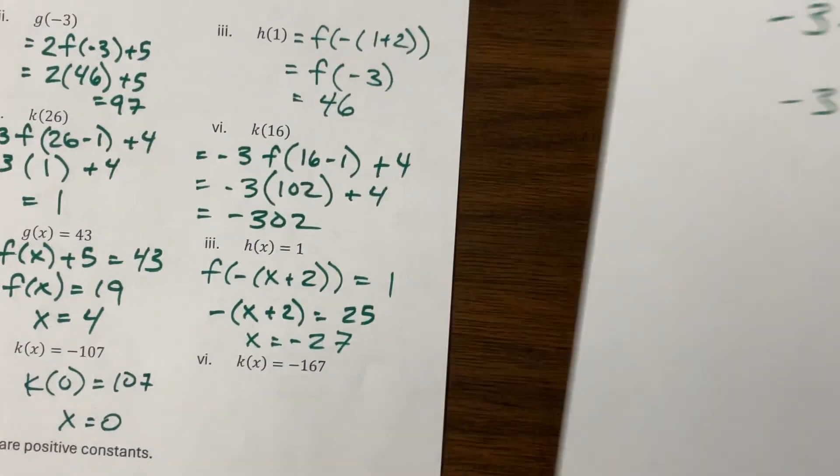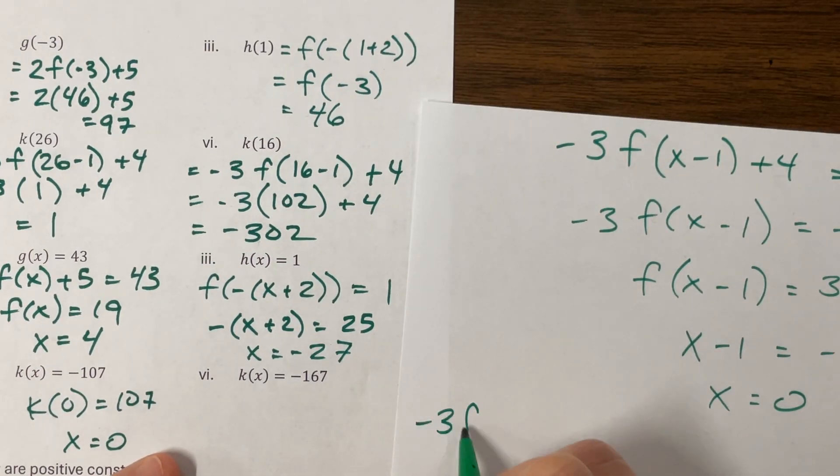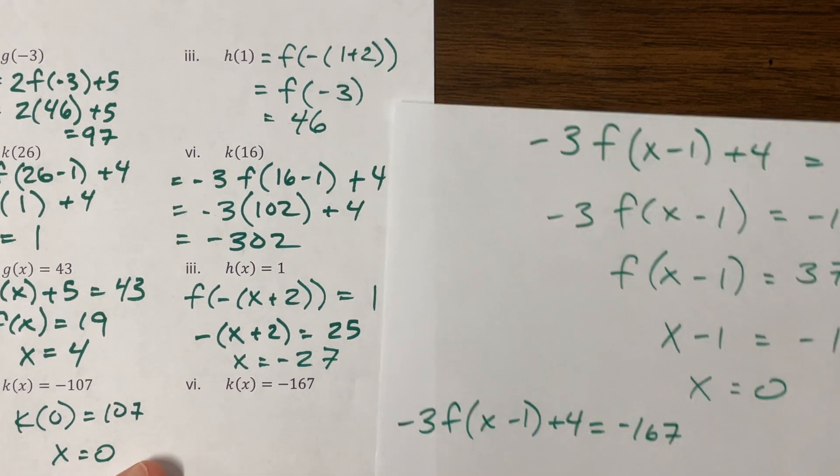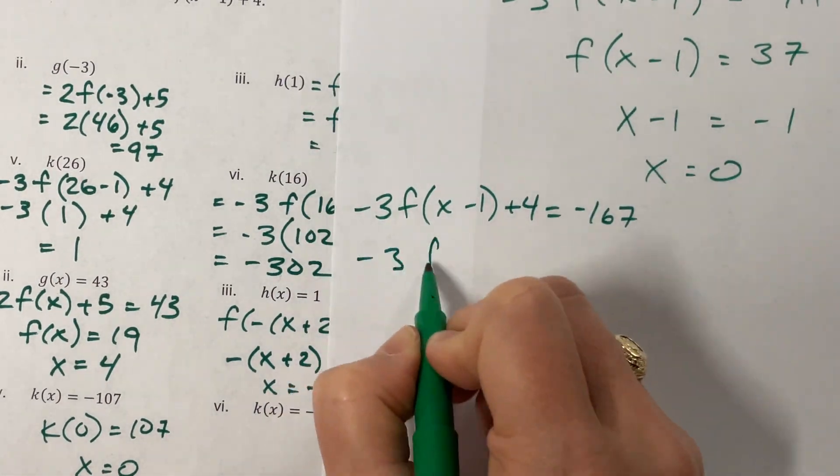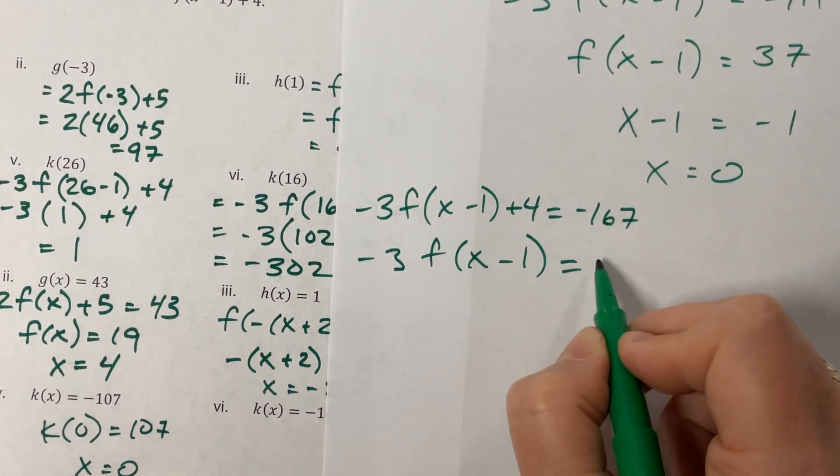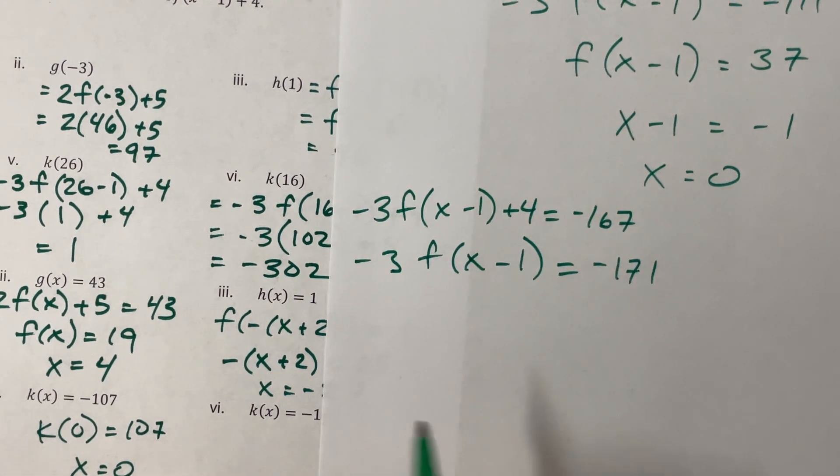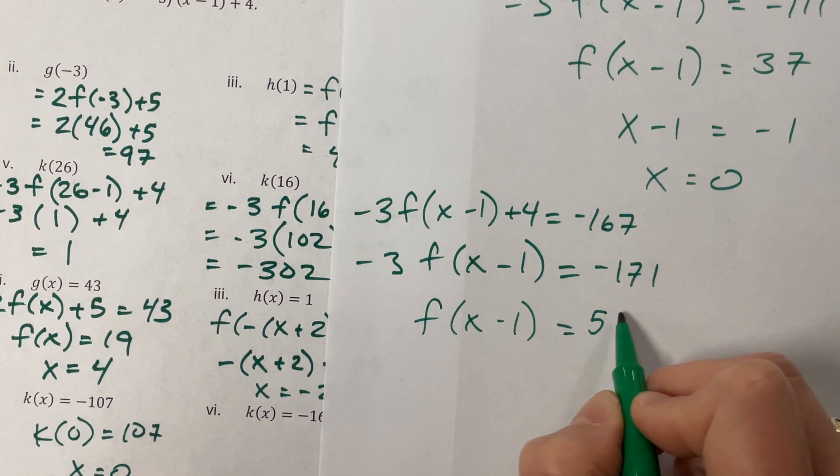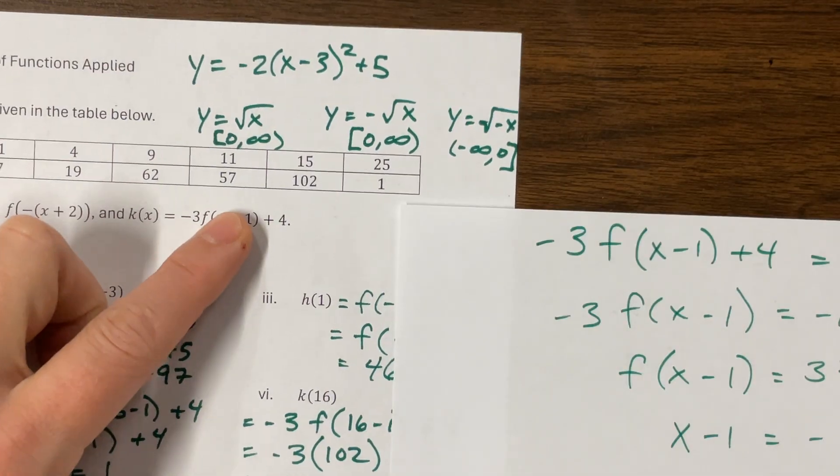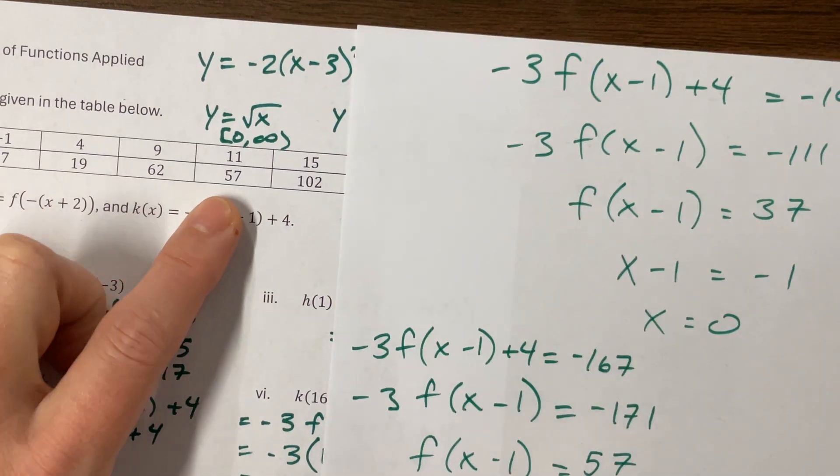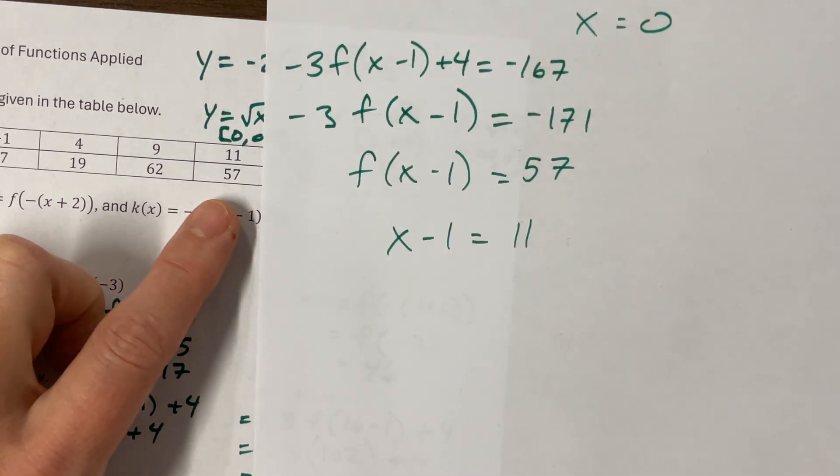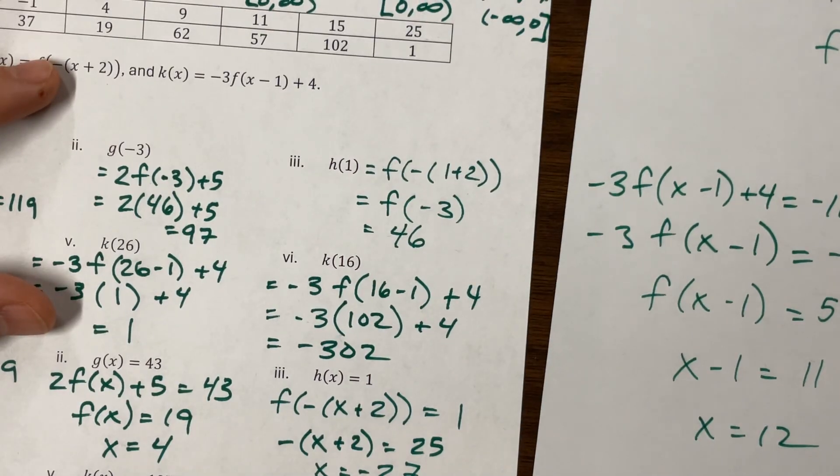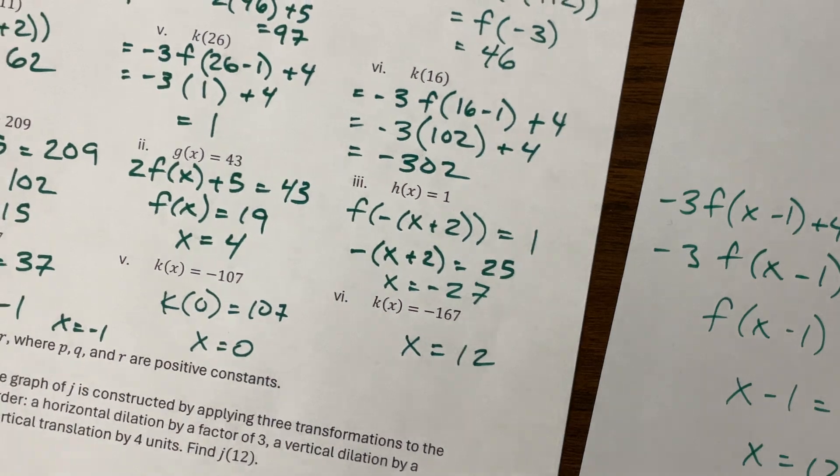And then the next one, K of x is a negative 3F of x minus 1 plus 4 is equal to negative 167. Subtract 4 negative 171. Does that, that is divisible by 3. That's convenient. Well, I did it on purpose. 3 goes in there 5, 7. Oh, and that was something from our table. So this x minus 1 will equal 11. Sorry. And so x equals 12. Cool. x equals 12. You can't see what I'm doing. There we go.